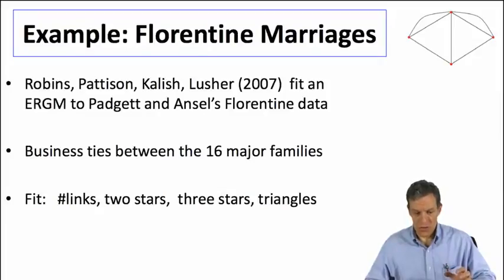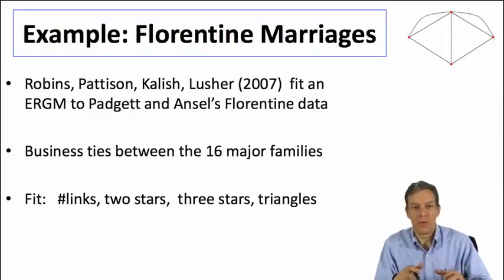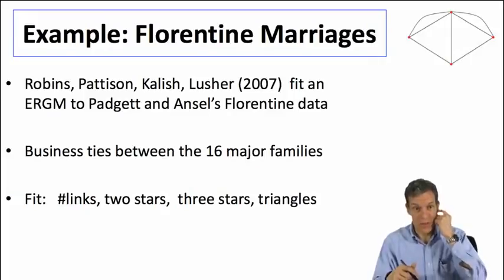Just an example now. We'll start with an example where you can estimate these things fairly easily, partly because it's a very small network. So we'll go back to our Florence example, the Florentine marriages, and in this case business dealings. That only has effectively 15 nodes that are actually connected, so a relatively small network.